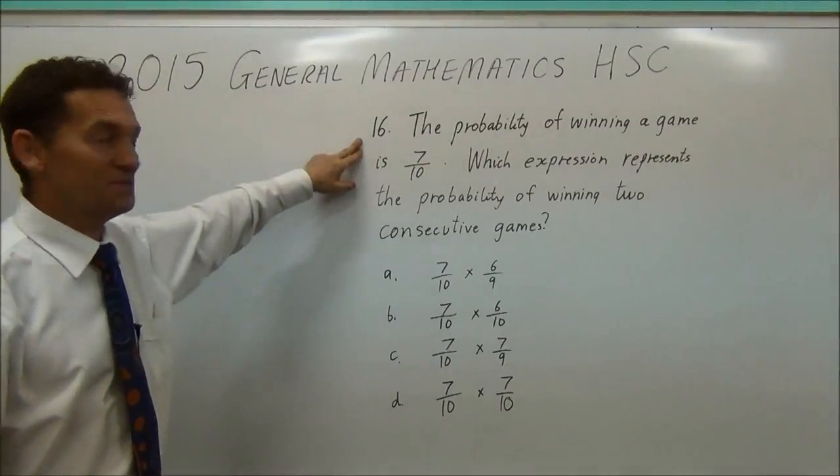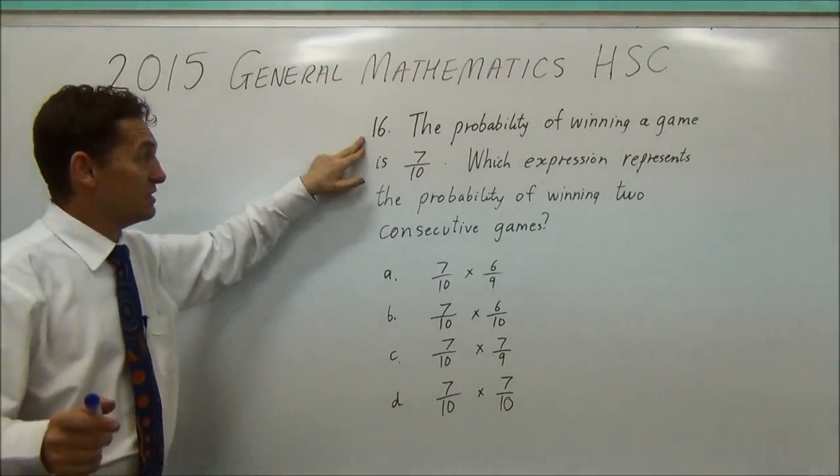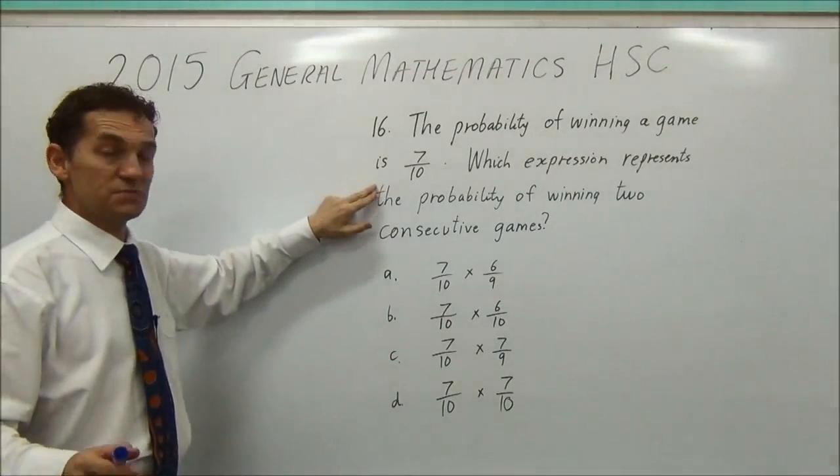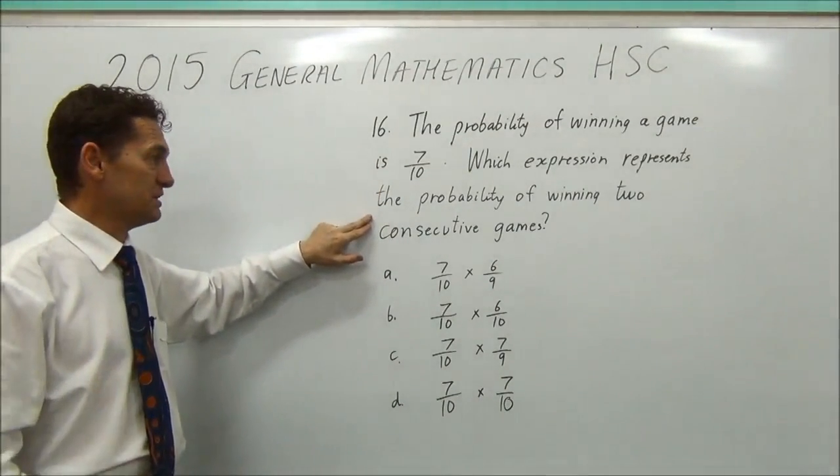G'day again. Question 16. The probability of winning a game is 7 on 10. Which expression represents the probability of winning two consecutive games?